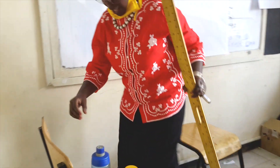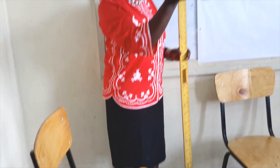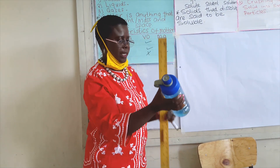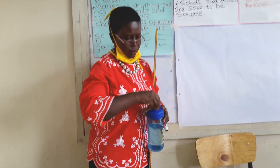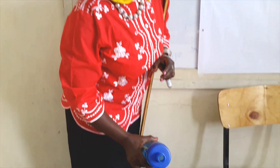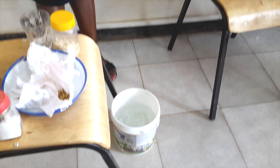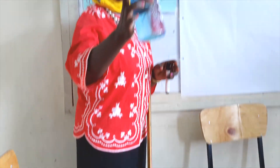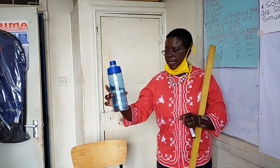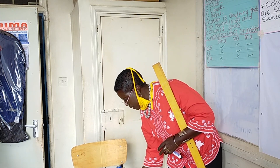We also have matter in form of liquid. Liquids flow. Liquids are matter that flows — we call that liquid. We have liquid, which is water, in this container. So it has occupied space in this container.